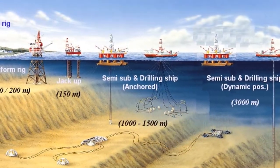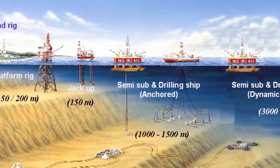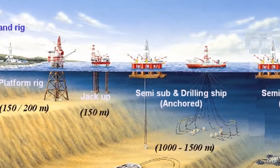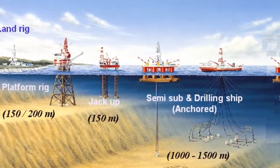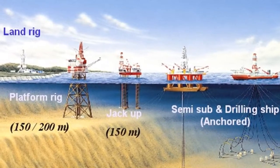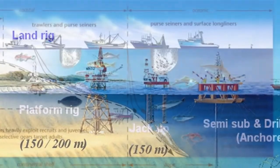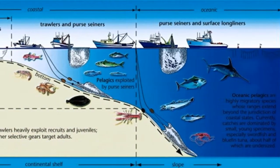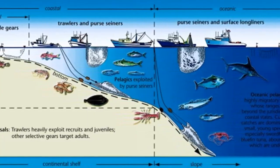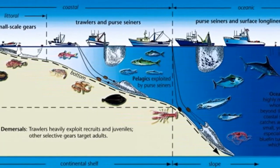Although continental shelves represent only 7.5% of the total ocean area, they have economic and political significance because they contain important mineral deposits, including large reservoirs of oil and natural gas, as well as huge sand and gravel deposits. The waters of the continental shelf also contain many important fishing grounds, which are significant sources of food.